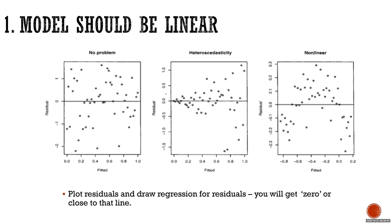Let's discuss the assumptions. The first assumption is that the model should be linear. If the model is linear, once you apply the regression and look at the residuals, all these residuals are randomly plotted. But if the data has nonlinear patterns, the residuals will look something different — the residuals will still have some pattern.